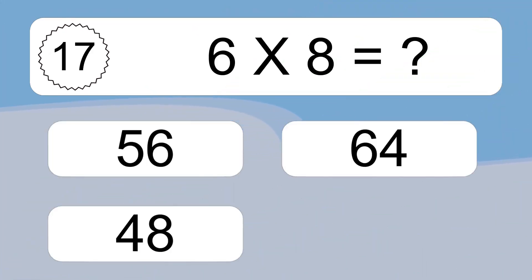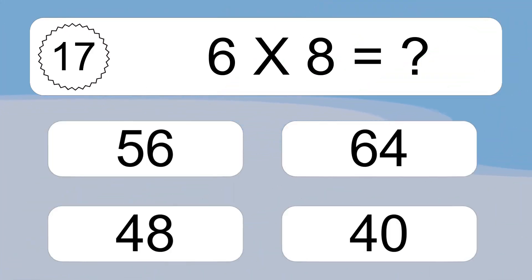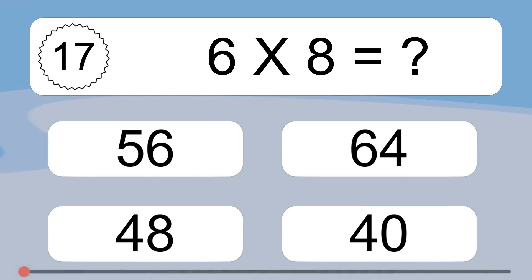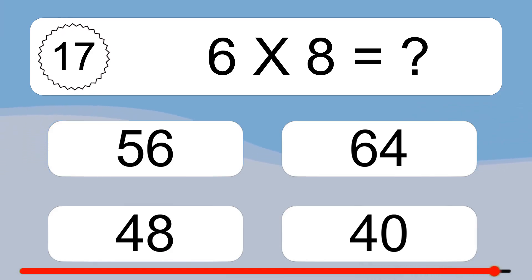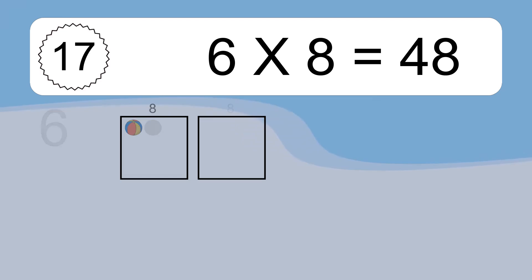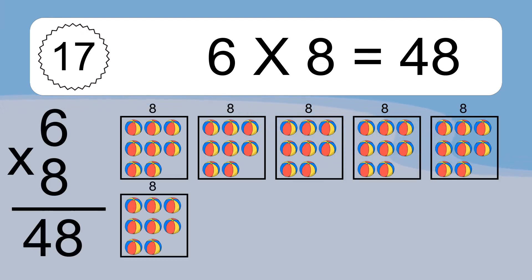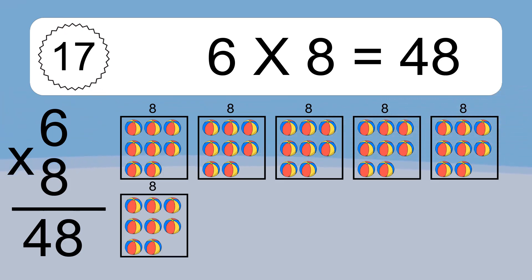6 times 8 equals what? 6 times 8 equals 48. We have 6 boxes, and each box has 8 colorful balls inside. If you count all the balls in all the boxes together, you will have 6 times 8 balls. This equals 48 balls.